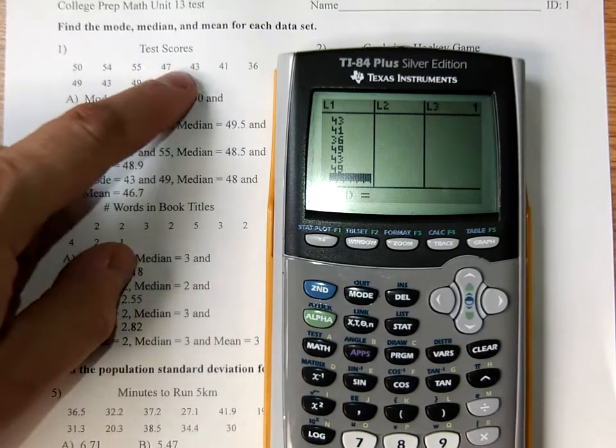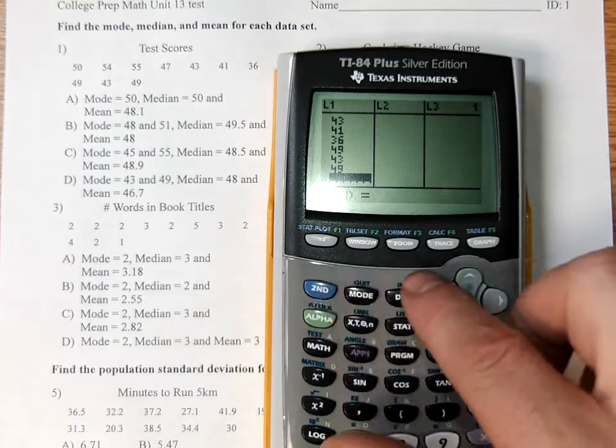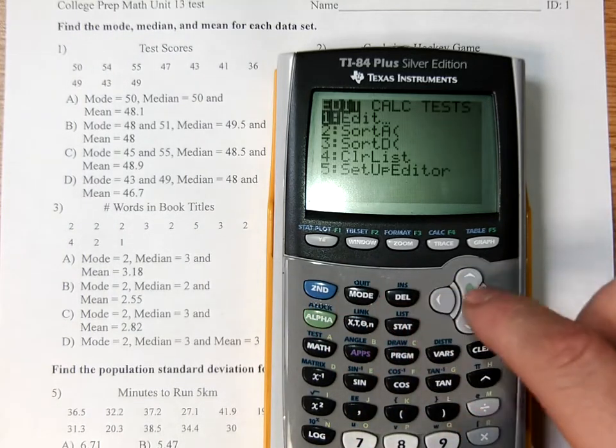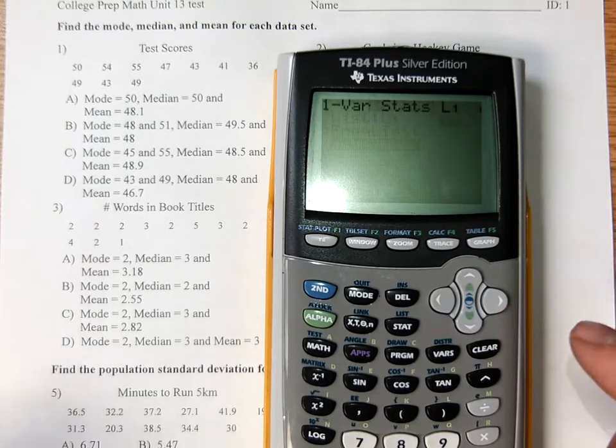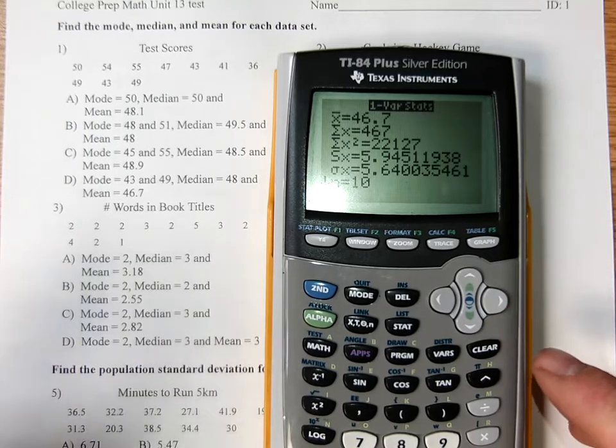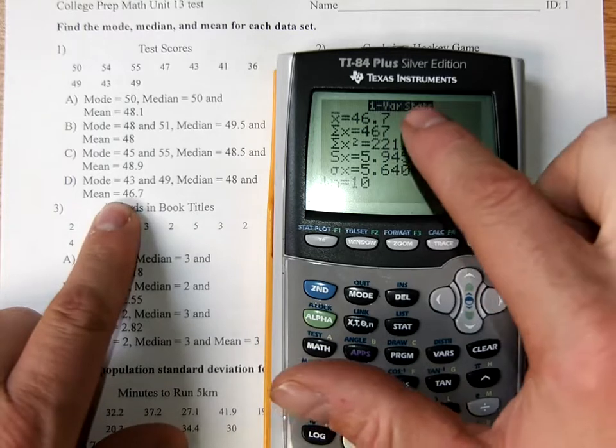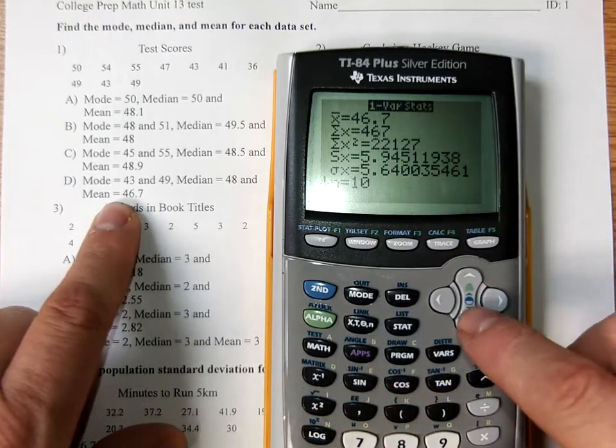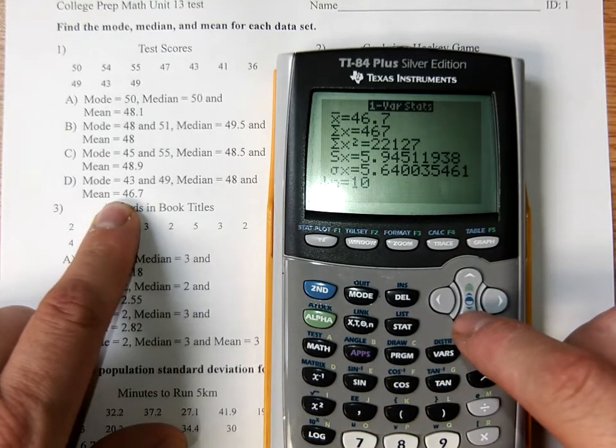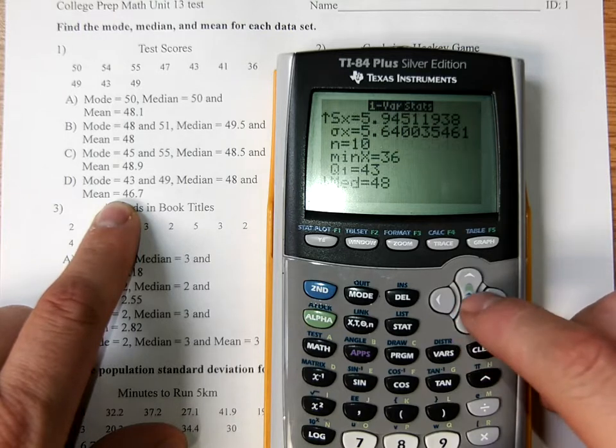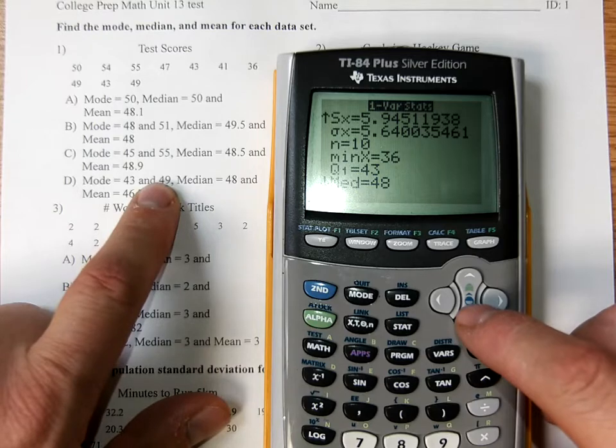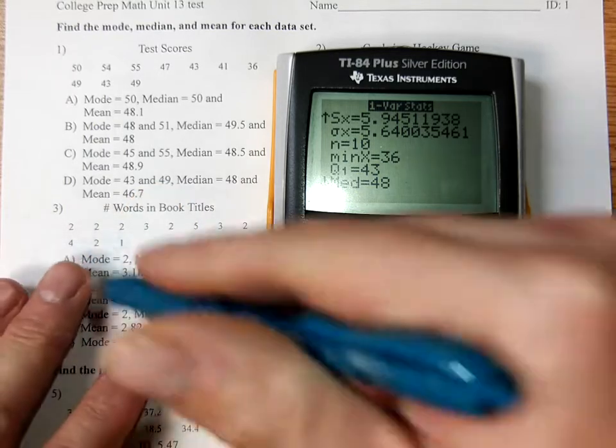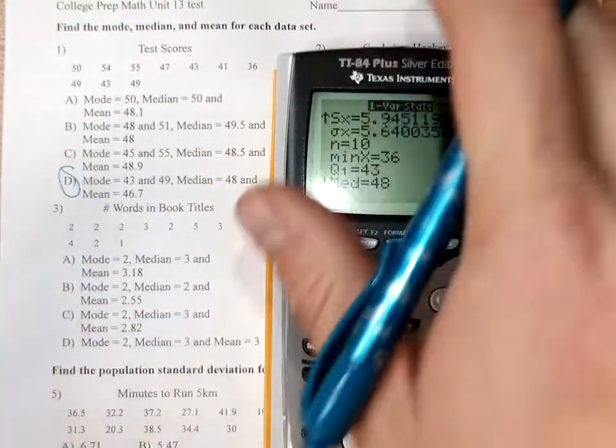There's 10 numbers there. We quit out. We go stat, calc, and we use one variable stats. We've got our mean, 46.7 right there. We've got our median of 48, and then there's two modes here, 43 and 49. Multiple choice should be easy to pick the right answers. So that's questions one through four.